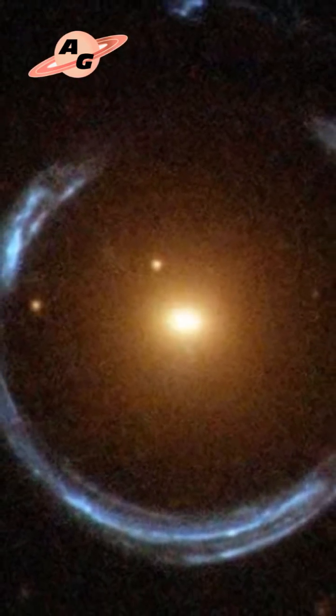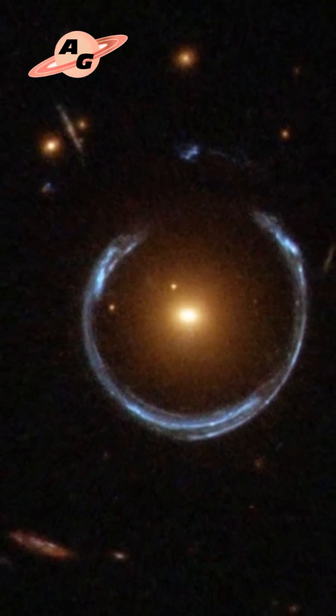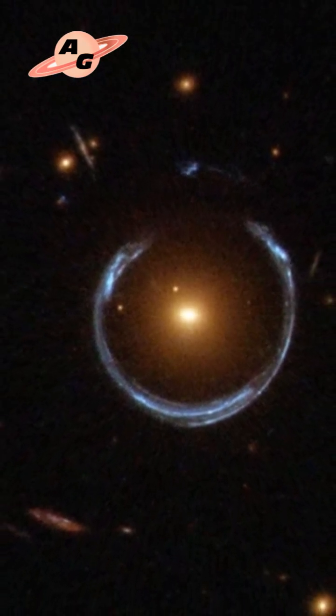The Cosmic Horseshoe galaxy is a system of two galaxies aligned along our line of sight from Earth. The foreground galaxy, designated LRG3-757, is closer to us at a distance of approximately 5.2 billion light-years.